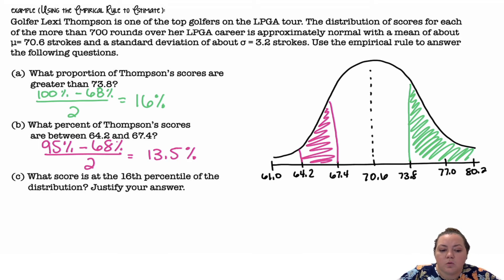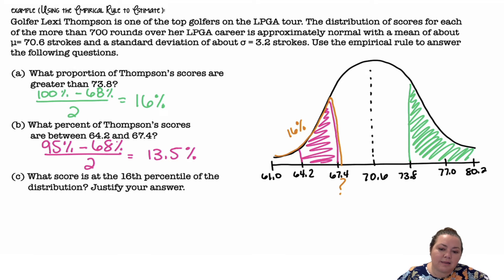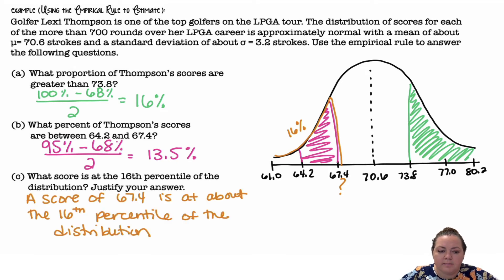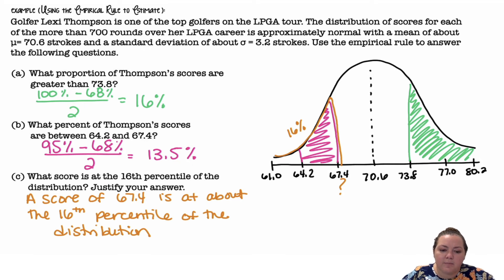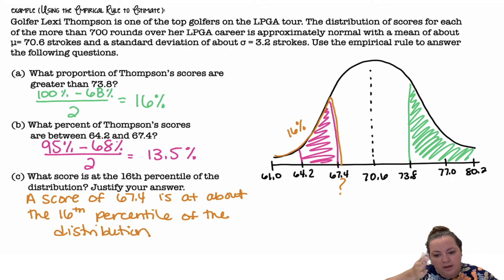What score is at the 16th percentile of the distribution? The 16th percentile is the percent less than, so I'm going from the left over to where I have 16%. Adding 0.15 plus 2.35 plus 13.5 gives me about 16%, and that corresponds to a score of 67.4 strokes at about the 16th percentile of the distribution.